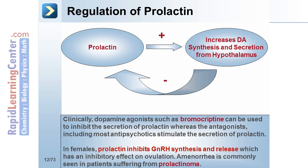In females, prolactin inhibits GnRH synthesis and release, which has an inhibitory effect on ovulation. Amenorrhea is commonly seen in patients suffering from prolactinoma.